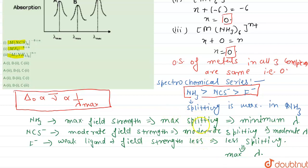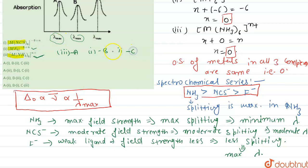From this information, the compound having NH₃ as a ligand possesses minimum wavelength because the field strength of NH₃ is maximum. Looking at the graph, A has the minimum wavelength, so complex 3 corresponds to A. Thiocyanate has moderate field strength and moderate wavelength B, so complex 1 is B. Fluoride has minimum field strength and maximum wavelength C, so complex 2 is C. Checking the options, option 2 is the correct answer.